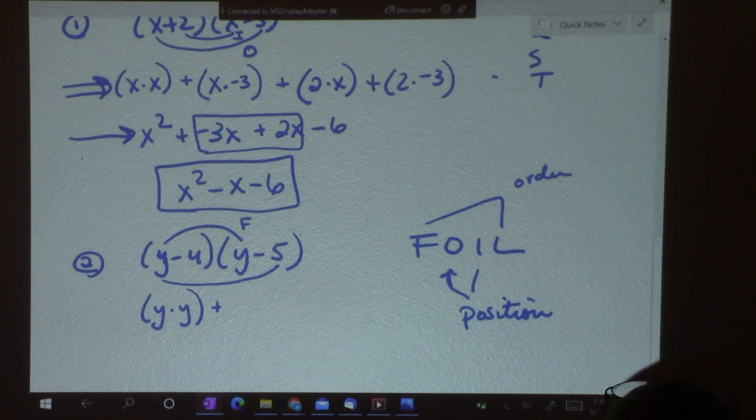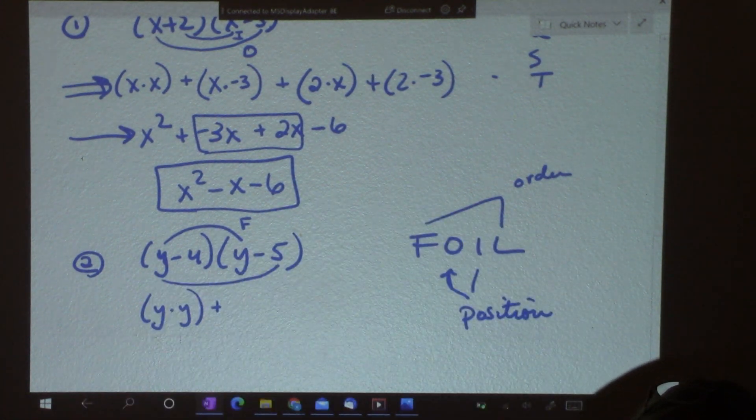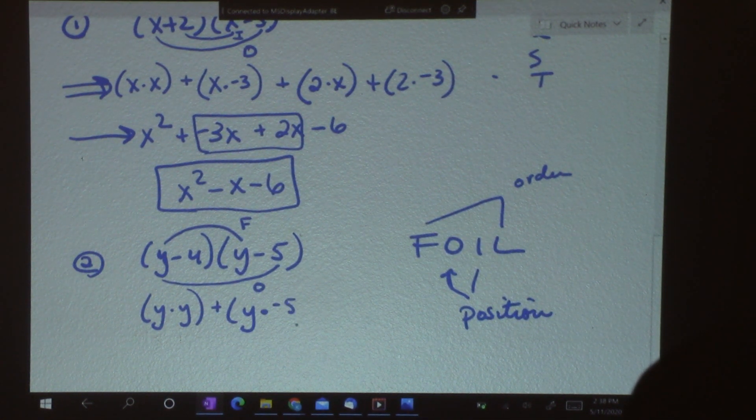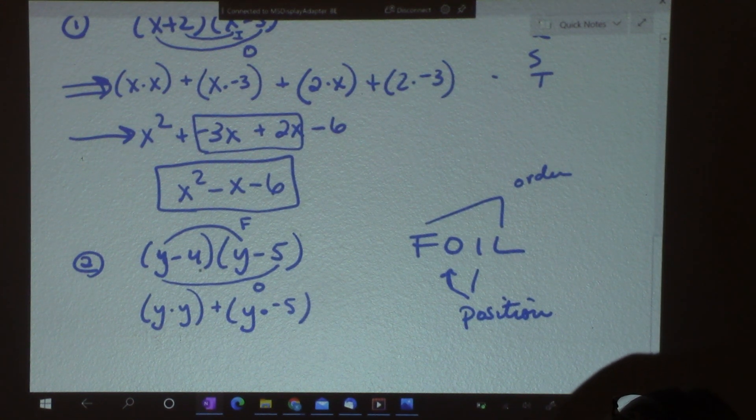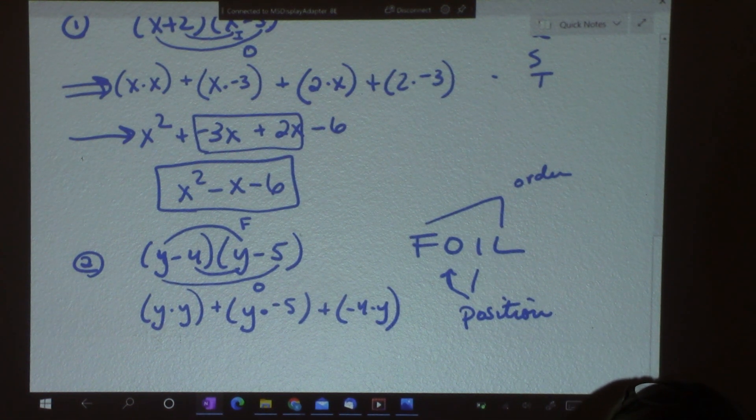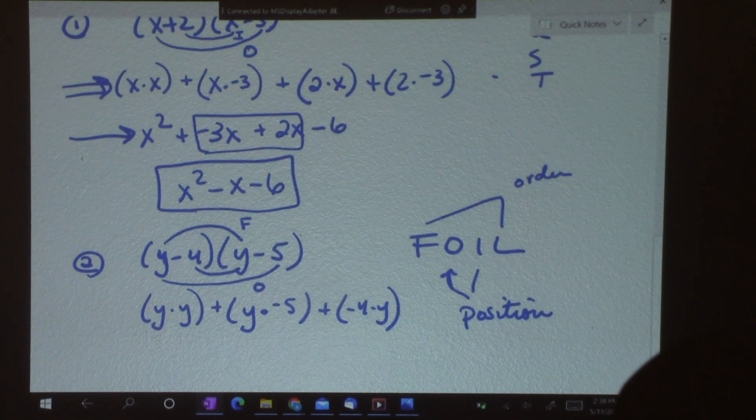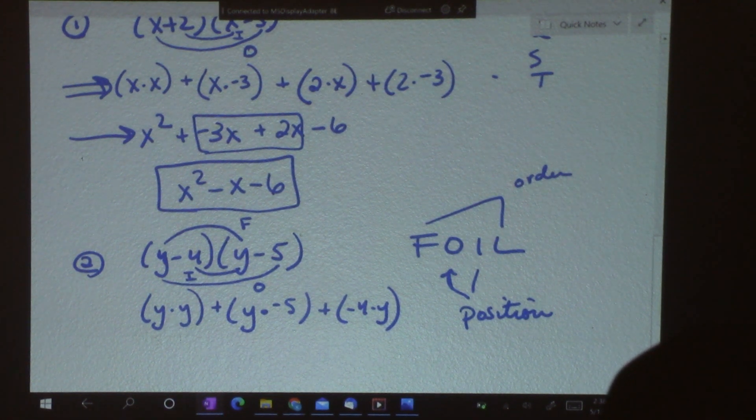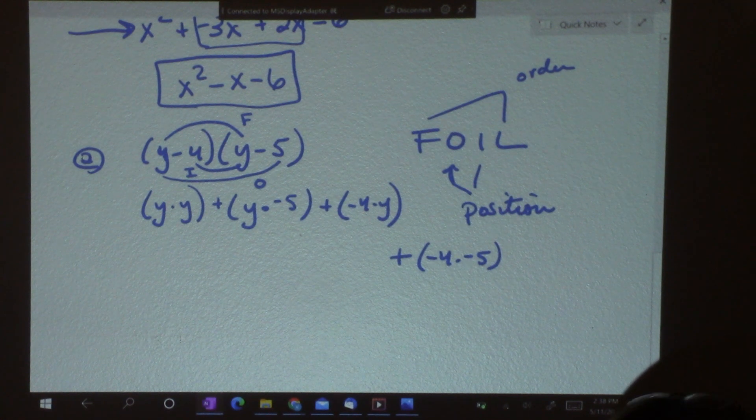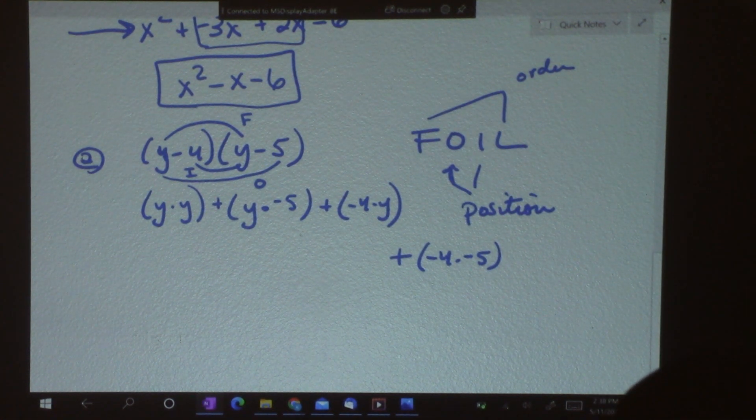So, order. First, second, third, last. Position. Are they outside or inside? So, I've got y times negative 5. And then, for I, inside, I've got negative 4 times y. That's inside. And then, last. I'm running out of room. I'm going to go down here a little bit. I've got negative 4 times negative 5. Don't forget to take the negative with it if I've got a minus.